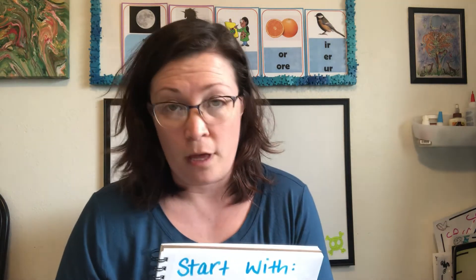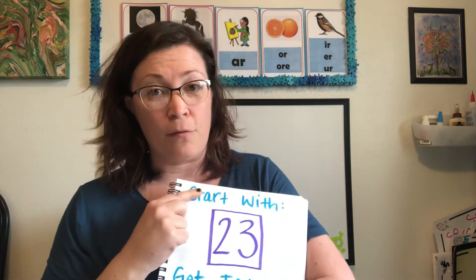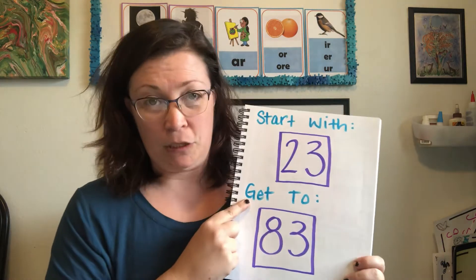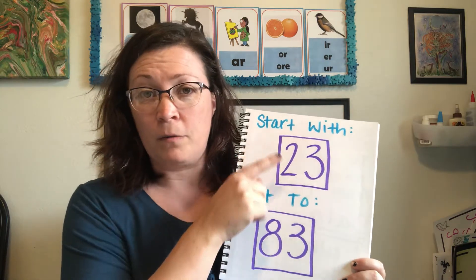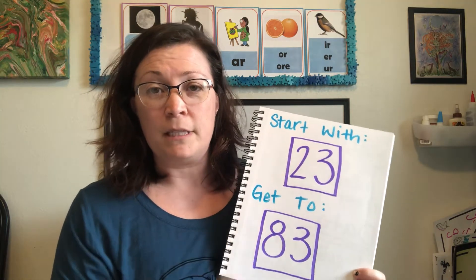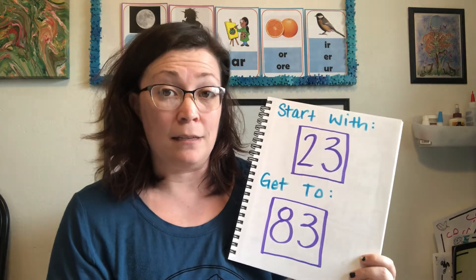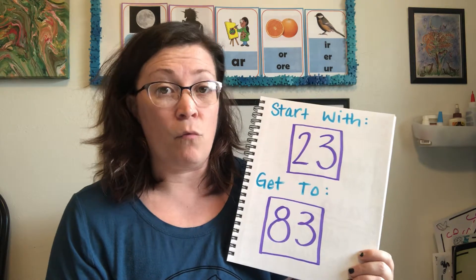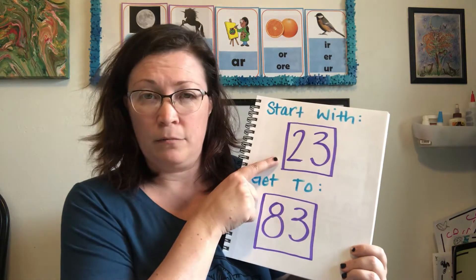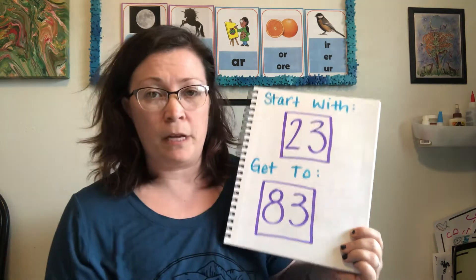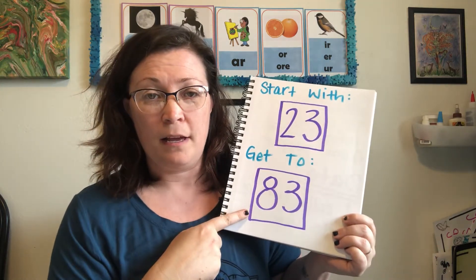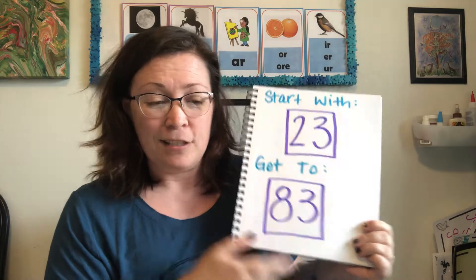Today we're gonna start with a game we all play. Before we started a number, we get to another number, but today we're gonna count by tens instead of ones. So we're gonna start at — what's this number? 23, of course. We're gonna start at 23, and where are we gonna end up? At 83. So let's look at our number chart and let's see what it's gonna look like to count by tens.